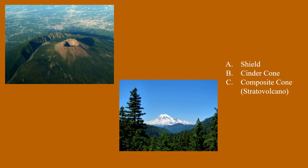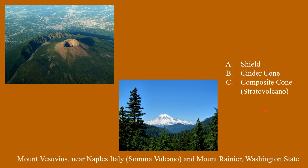Here are two other volcanoes of the same type — composite cone volcanoes, also known as stratovolcanoes. The one up here is Mount Vesuvius near Naples, which once buried Pompeii and Herculaneum. The second is Mount Rainier in Washington State. Mount Vesuvius is a special type called a soma volcano, where an older mountain exploded and blew off its top, forming a caldera, and then a new composite cone volcano formed in the center. That ancient mountain was called Mount Soma, and the new one is Mount Vesuvius, forming a soma complex.